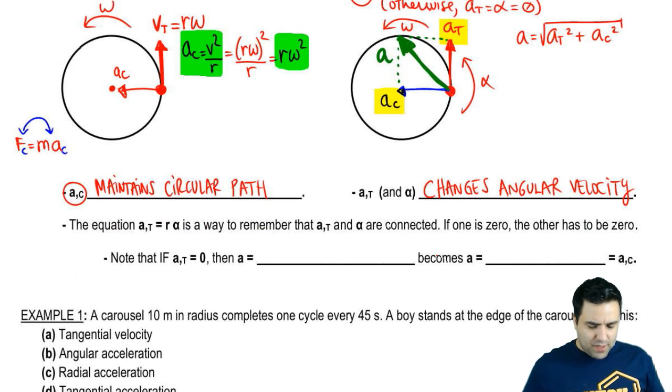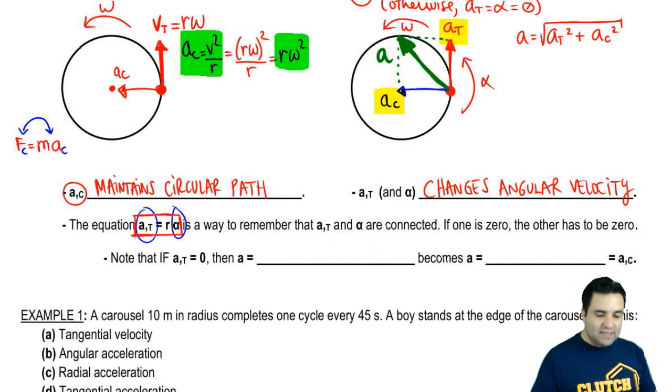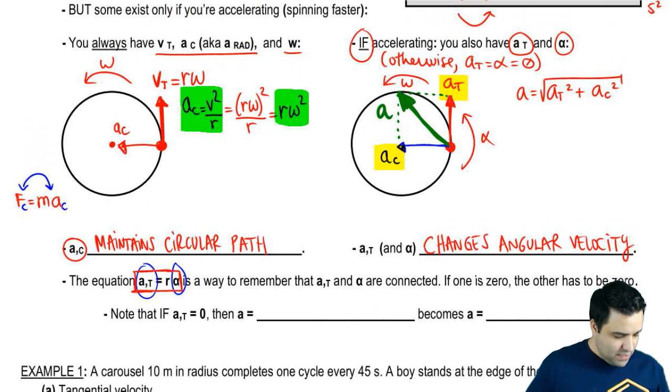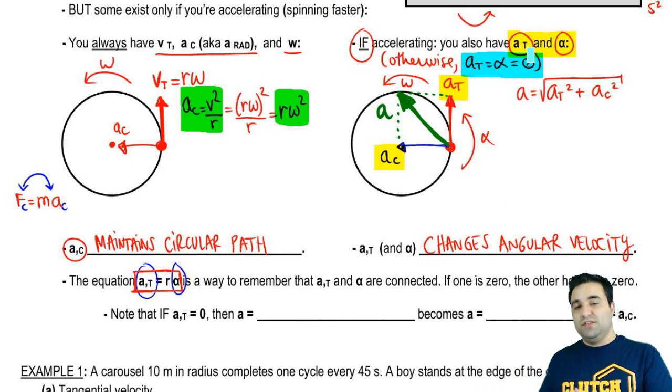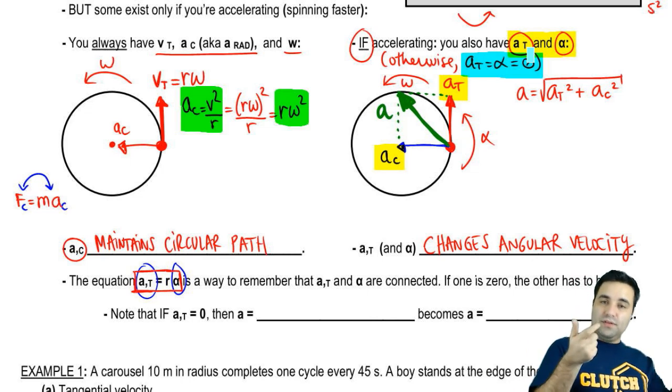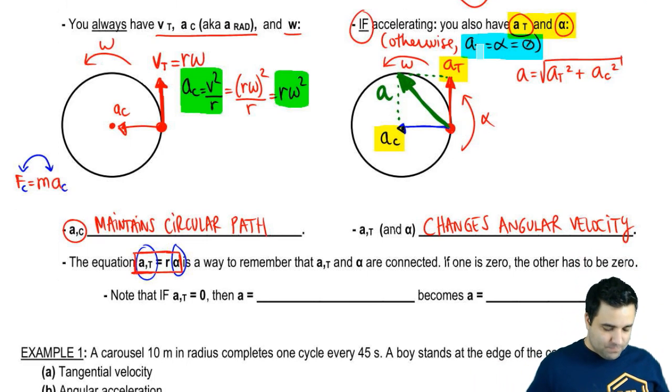Two more points, then we're going to do an example. This equation, AT equals R alpha, which is one that I gave you earlier, is a good way to remember that AT and alpha are connected. They're linked up together, which is what we see here. You have this and this or they're both zero. These guys are both either non-zero together or they're both zero together.